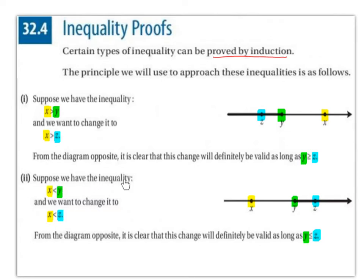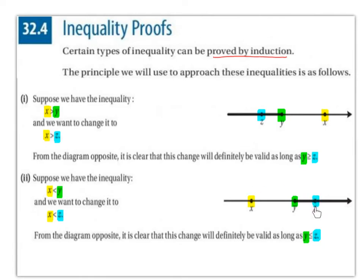Suppose we have the inequality x is less than y. So x is some number less than y on the number line, so x is to the left of y. And we want to change it to x is less than z, so x is some number less than some number z — x is to the left of z on the number line.